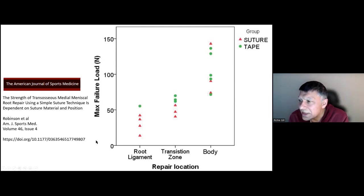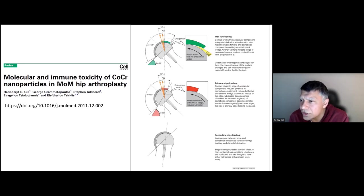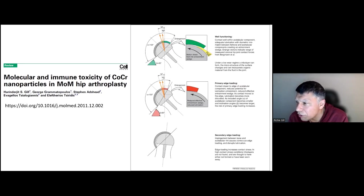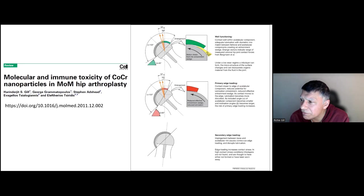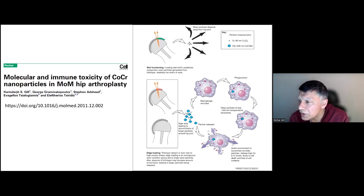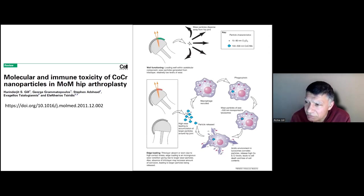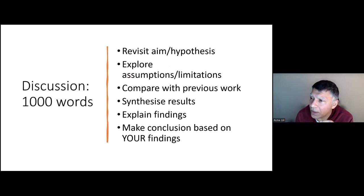Figures really help you explain your concepts. For example, in a paper we wrote on immune toxicity of cobalt chrome, there were complex issues around lubrication and lack of lubrication according to implantation orientation. With well-thought-out figures you can explain rather complicated concepts in an easy-to-understand way. We followed that with a diagram explaining the mechanism giving rise to adverse reactions to metal debris.